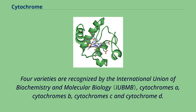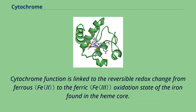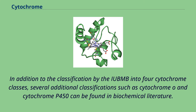Four varieties are recognized by the International Union of Biochemistry and Molecular Biology: Cytochromes A, Cytochromes B, Cytochromes C, and Cytochrome D. Cytochrome function is linked to the reversible redox change from ferrous to the ferric oxidation state of the iron found in the heme core. In addition to these four cytochrome classes, several additional classifications such as cytochrome O and cytochrome P450 can be found in biochemical literature.